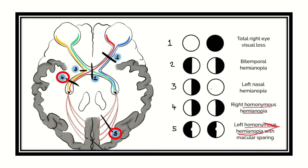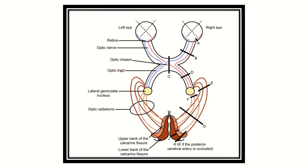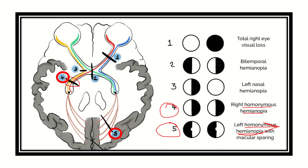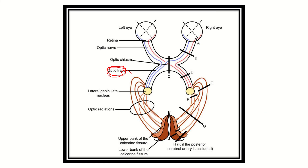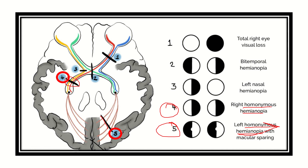Homonymous hemianopia is located at the fourth and fifth positions in the pathway — this area corresponds to the optic tract. Any lesion in the optic tract can cause homonymous hemianopia. Position five shows the optic radiation fibers, so lesions in either the optic tract or optic radiation can cause homonymous hemianopia.